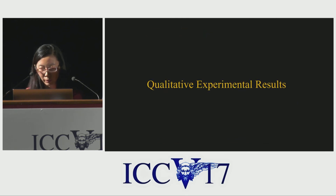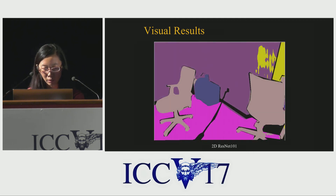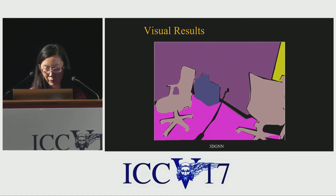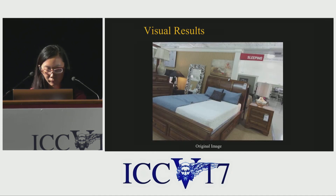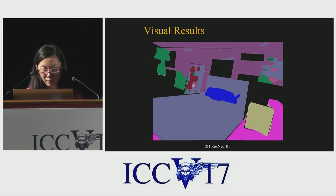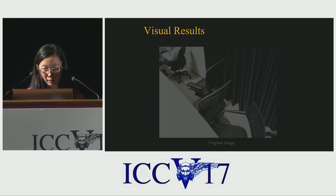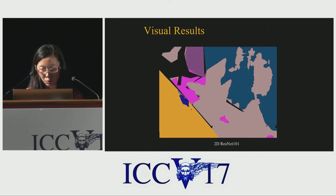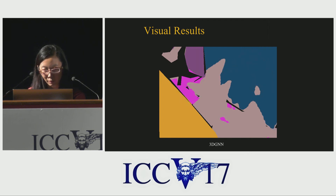Let's see some qualitative results. This is the original image. This is the prediction using 2D solutions. And this is our final result. We can see that with our 3D graph neural network, confusion between the wall and the door can be resolved, and the boundaries of objects become much more accurate and clearer. In another example, errors exist in the mirror and on the wall in 2D predictions, and our 3DGN produces much better results. In another case, due to the appearance similarity between the chair and the curtain, there are confusions in the 2D predictions, while our 3D predictions are much better.